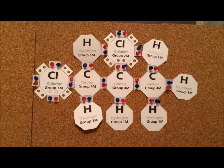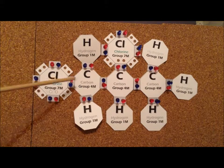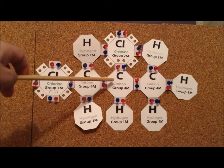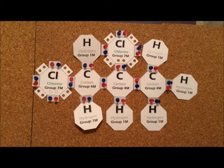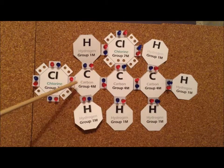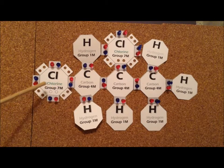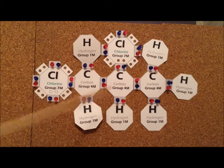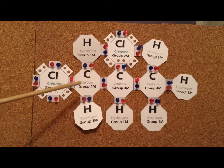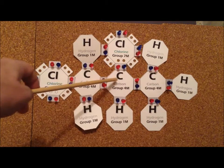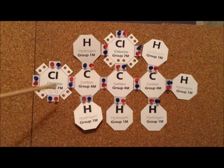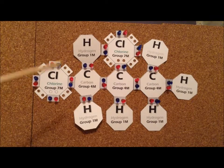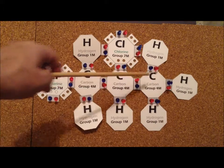For this alkyl halide, we have one chlorine atom attached to an end carbon and one chlorine atom attached to a central carbon. Starting at this end, since we only get the lowest possible number, this is going to be 1,2-dichloropropane. 1,2 because this is the first carbon, this is the second carbon. It is dichloro because we have two chloro groups, and it's propane because that's the name we use for a 3-carbon alkane.